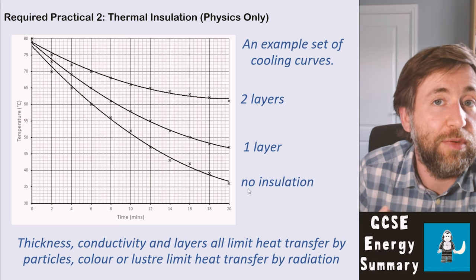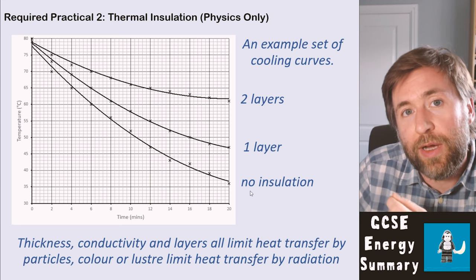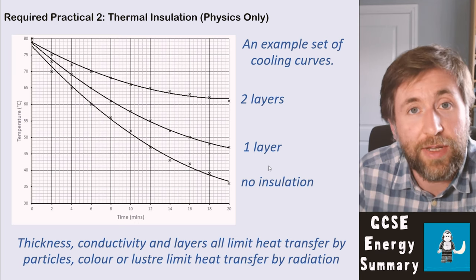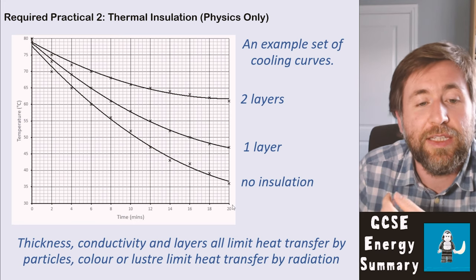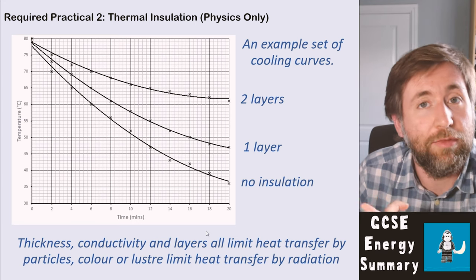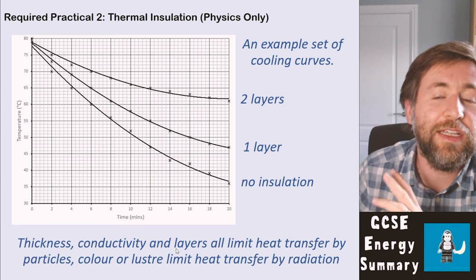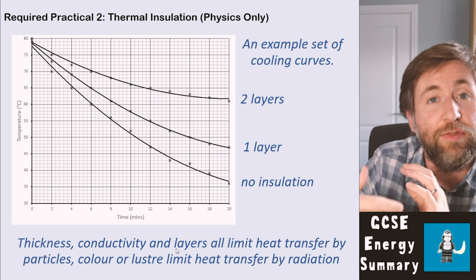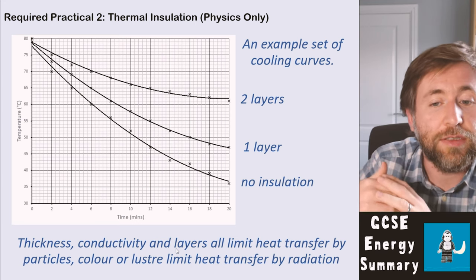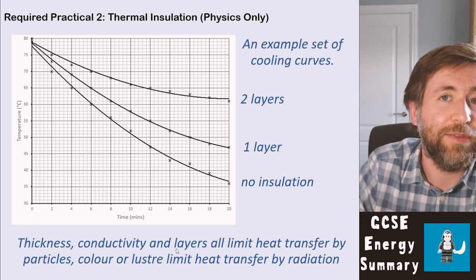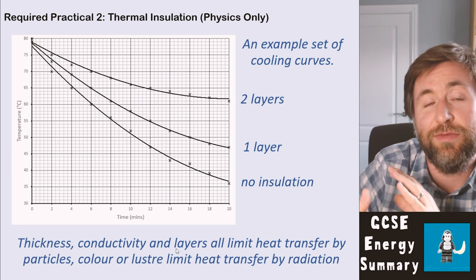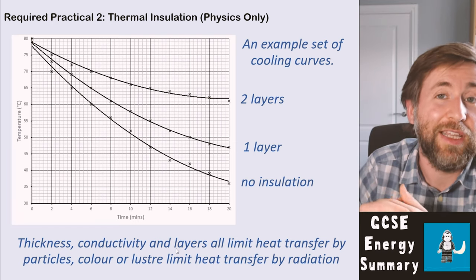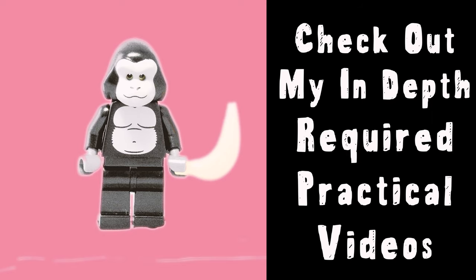For example, the top curve might have been two layers, the second one layer, and the third no insulation at all. When analyzing and explaining why different layers cause different rates of cooling, we can talk about heat transfer by particles or by radiation. Thickness, conductivity, and layers all limit heat transfer by particles — by particles knocking into each other and transferring heat energy. Color or luster limits heat transfer by radiation, which is infrared. Dark, matte materials emit infrared at a higher rate.